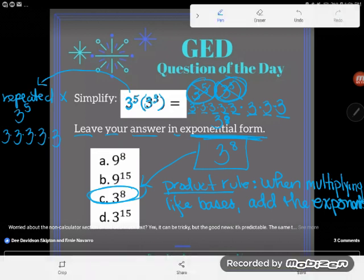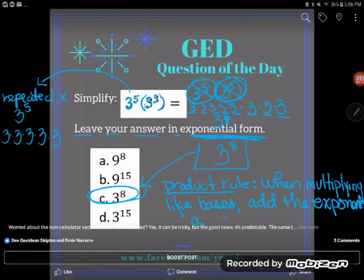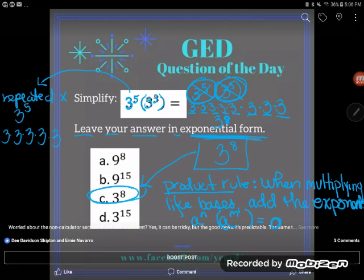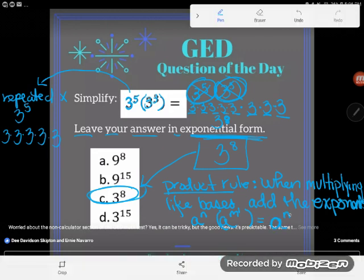And so that shortcut way, how your algebra teachers might write this on the board, is they'll tell you when you have like bases, they might have different exponents, but they have the same base and they're multiplying, you just keep that base the same and add the exponents.